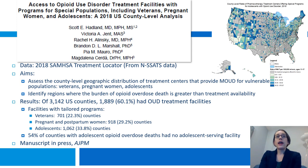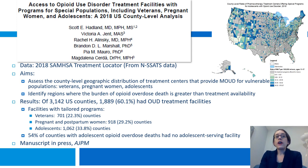The last study I wanted to show was a county-level analysis looking at access to opioid use disorder treatment facilities with special programs for adolescents, veterans, and pregnant women, using the same data source. We aimed to look at the county-level geographic distribution of treatment centers providing medication for these vulnerable populations and identify regions where the burden of opioid overdose death was greater than treatment availability. Of the 3,142 counties in the United States, about 60% had some opioid use disorder treatment facilities, but only 22% had programs for veterans, 29% had programs for pregnant and postpartum women, 33% had programs for adolescents, and 54% of counties with adolescent opioid overdose deaths had no adolescent-serving facility.